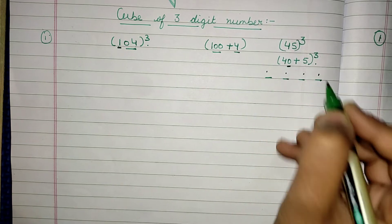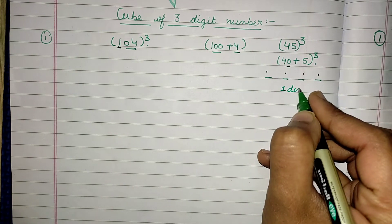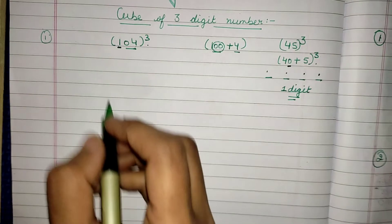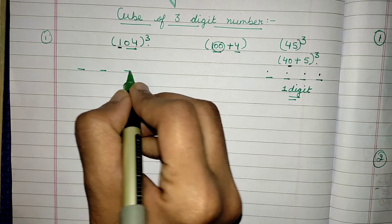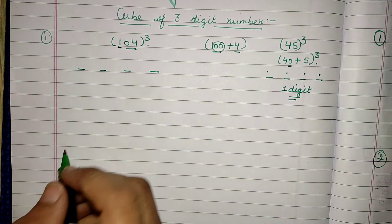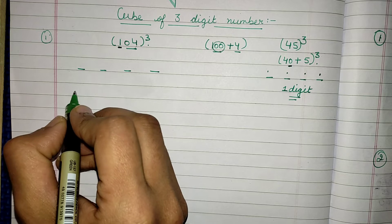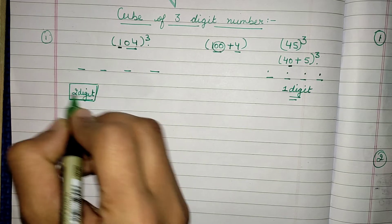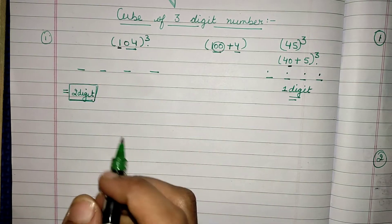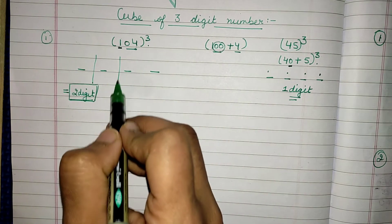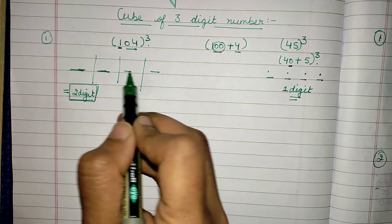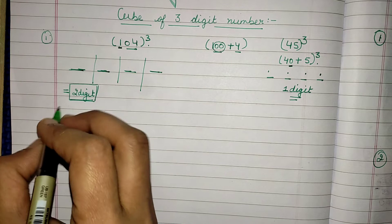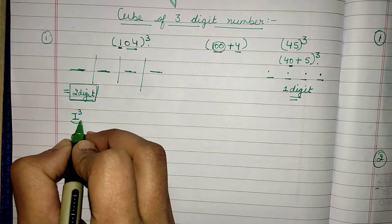Each of those parts would contain only one digit in the answer. But now I am having two zeros, so I will again divide my answer into four parts and each part can contain a maximum of two digits. Each of the first, second, third, and fourth parts will have two digits.